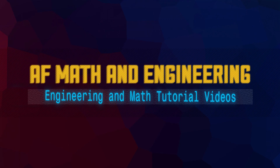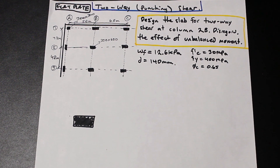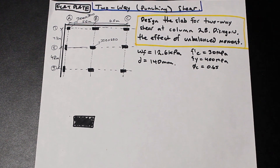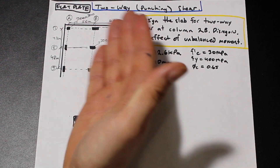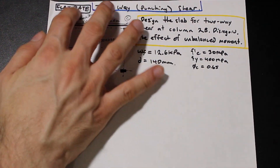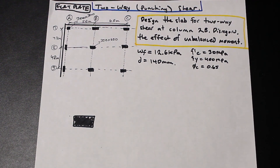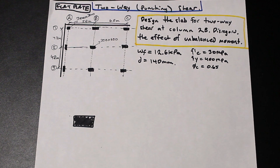Hey guys, welcome back. Brad here at Math and Engineering. Let's do a video on two-way punching shear. We're getting into some topics in concrete that are really related to civil engineering. We're given a layout of columns with a flat plate slab, and we're asked to design the slab for two-way shear at column 2B, disregarding the effect of unbalanced moment transfer. So first we're just going to do the two-way punching shear.